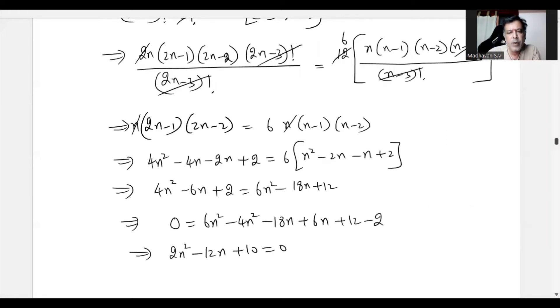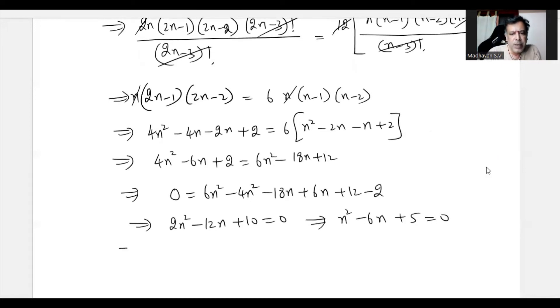Again, dividing both sides by 2, we will have N² - 6N + 5 equal to 0. So this can be split.